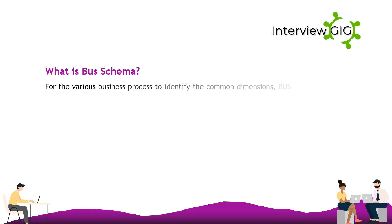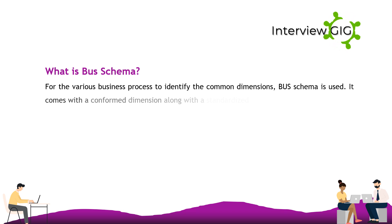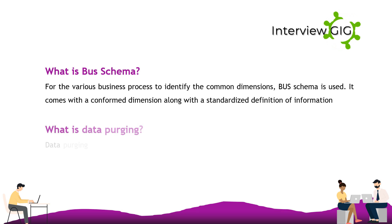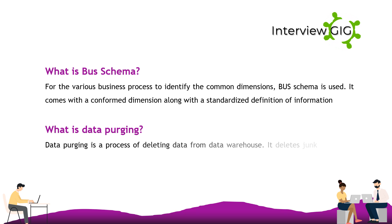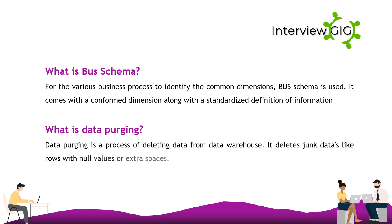Bus schema is used to identify common dimensions for various business processes. It comes with a conformed dimension along with a standardized definition of information. Data purging is a process of deleting data from the data warehouse — it deletes junk data such as rows with null values or extra spaces.